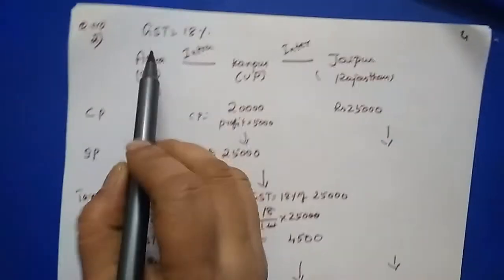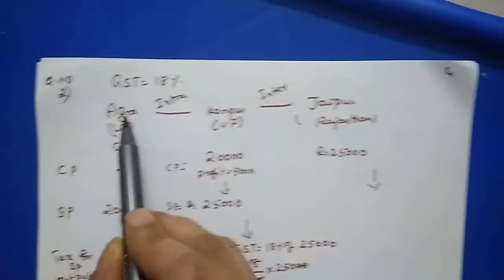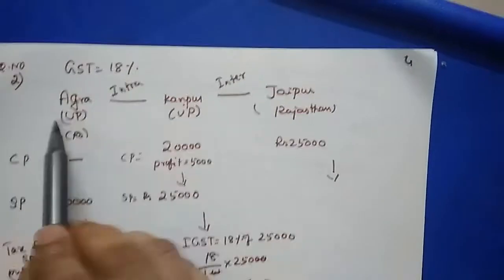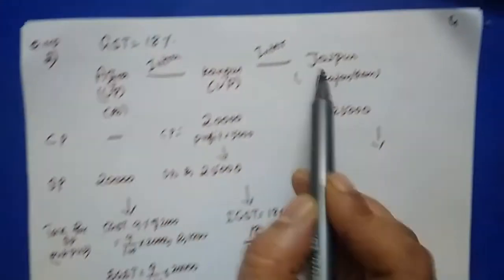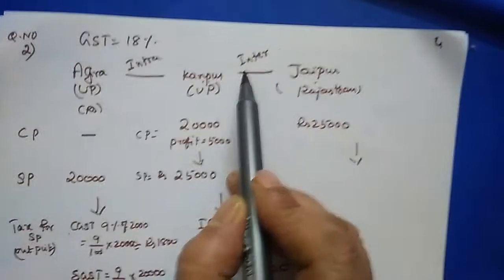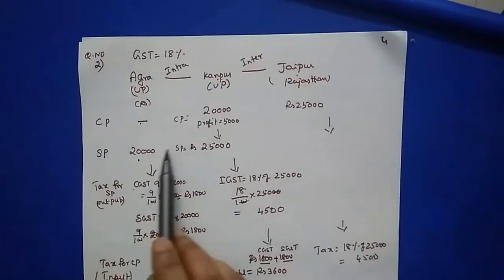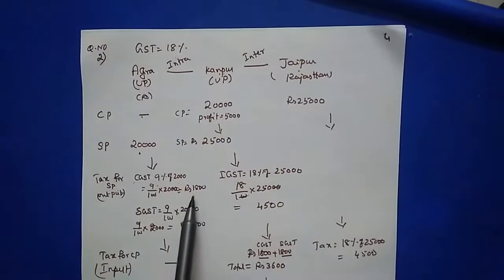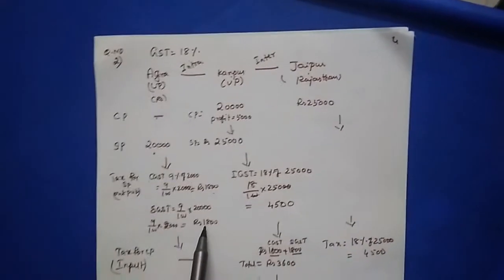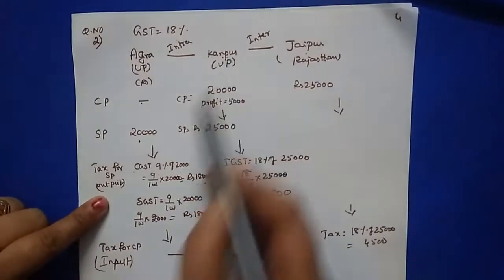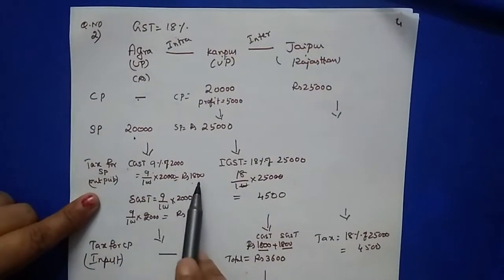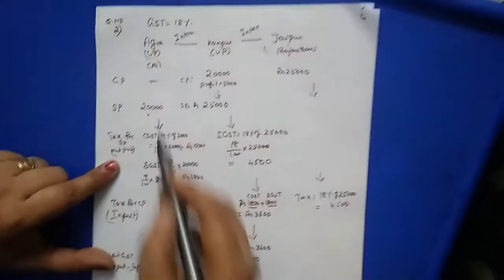Question 2: GST 18%. Agra to Kanpur - both in UP, so intra-state. Kanpur to Jaipur - UP and Rajasthan, so interstate. For Agra: CP unknown, SP = 20,000. CGST = 9% of 20,000 = 1800, SGST = 9% of 20,000 = 1800. No input tax since CP is unknown. Output tax = 1800 + 1800 = 3600.